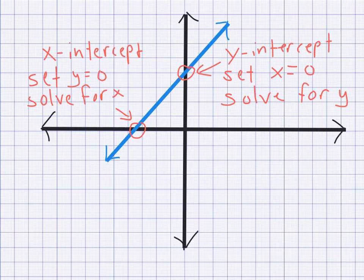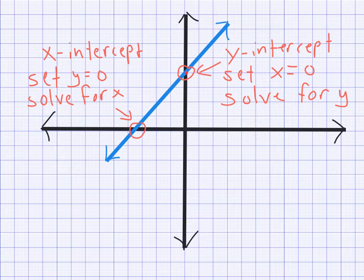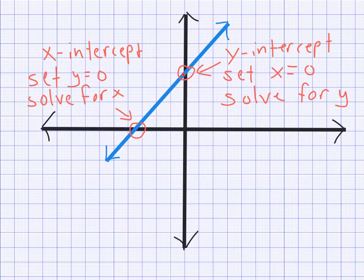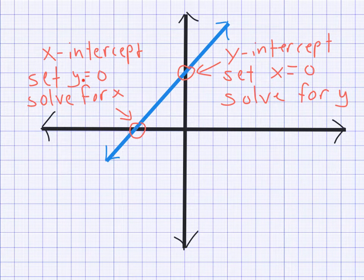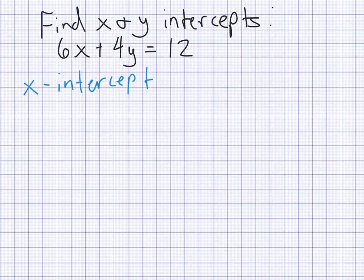Next we're going to talk about x-intercepts and y-intercepts. I have a little xy-plane here with a blue line representing a linear equation, and I've highlighted the x and y intercepts. The y-intercept is simply the point where the line crosses the y-axis. The x-intercept is the point where the line crosses the x-axis. To find the y-intercept, you set x equal to zero and solve for y, since being on the y-axis means you haven't moved left or right at all.